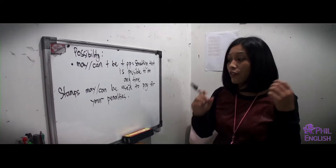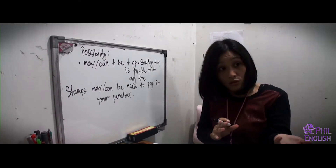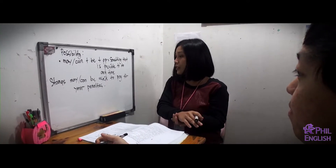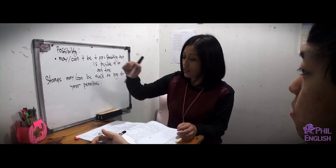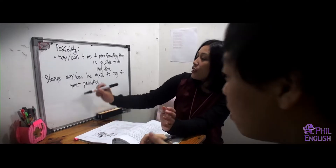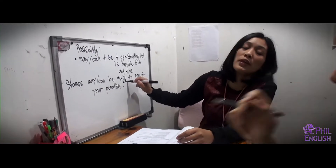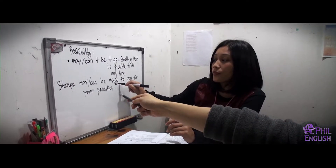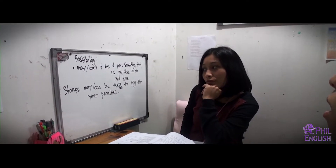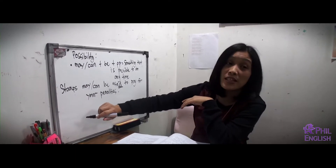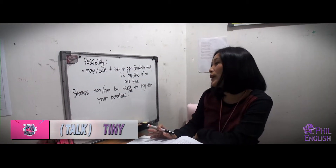So let's have an example. In the academy, we usually have stamps. Now, if you have a penalty, you can always use your stamps in exchange for your penalty — you can remove your penalties in exchange for those stamps. Always use the past participle form of your verb. The structure is: subject + may or can + be + past participle. In here, we are using the passive form.